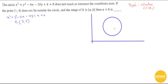I've drawn a circle with center at (3, 5). The point (1, 4) should not lie outside the circle — meaning it must lie inside or on the circle.